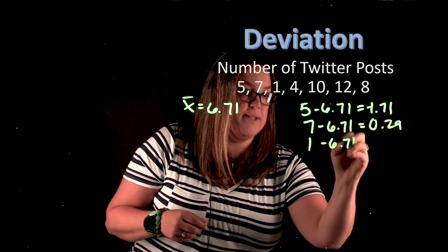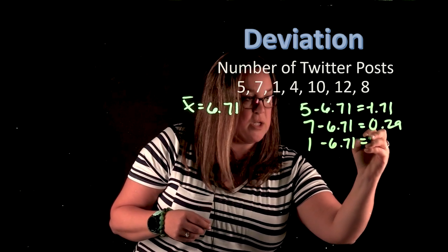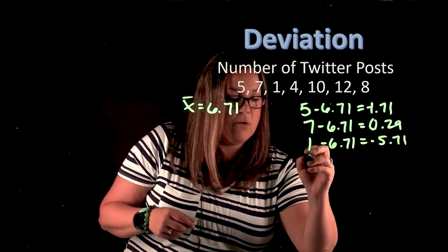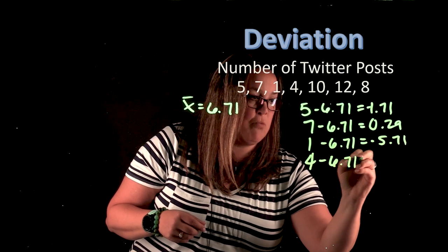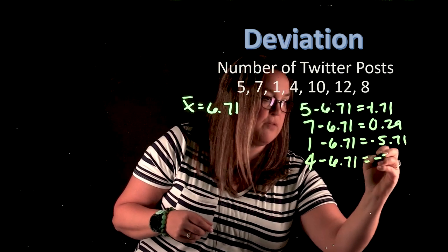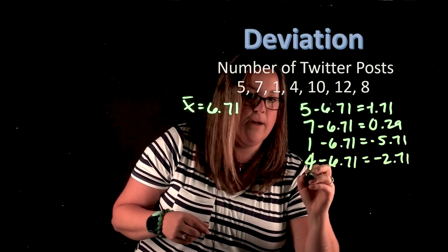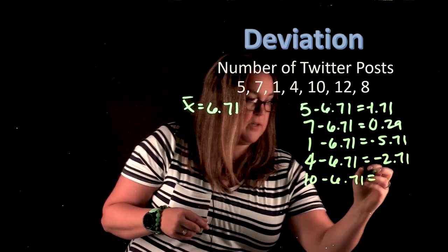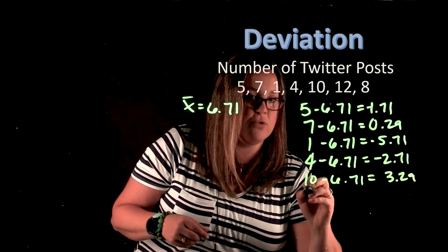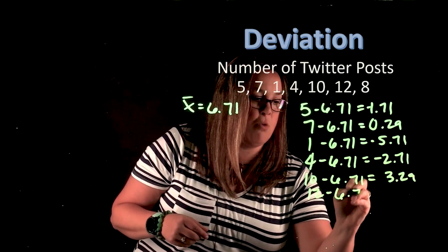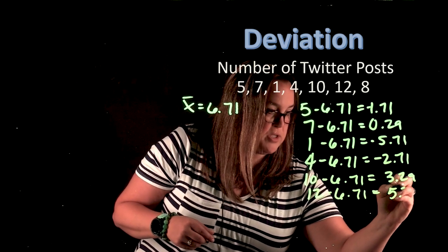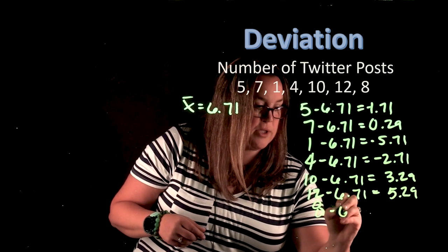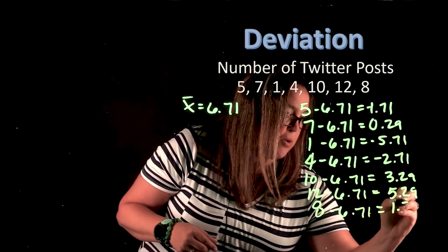I have 1 minus 6.71, and that gives me a deviation of negative 5.71. I have 4 minus 6.71, and that gives me a deviation of negative 2.71. Then I have 10 minus 6.71, and this one's going to be positive, again, because it's above the mean. And that's 3.29. And then I just have two more observations. I have 12, which would give me a deviation of 5.29. And then I have 8, which gives me a deviation of 1.29.